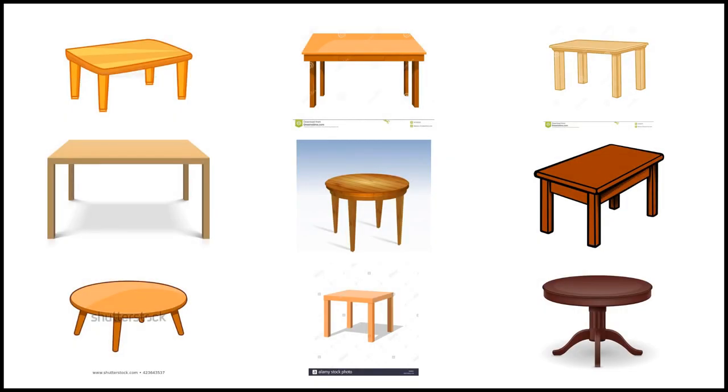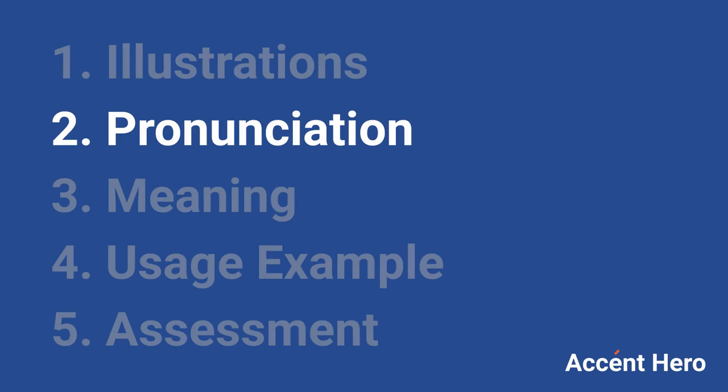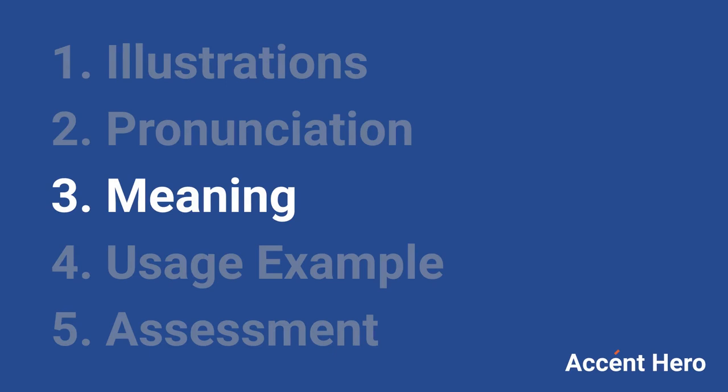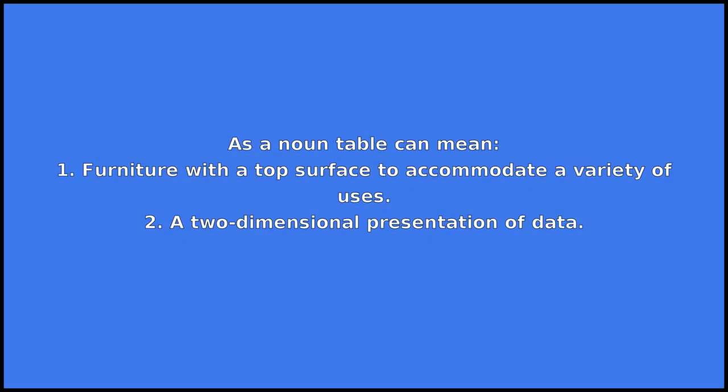Table. Table can be a noun or a verb. As a noun, table can mean: 1. Furniture with a top surface to accommodate a variety of uses. 2. A two-dimensional presentation of data.